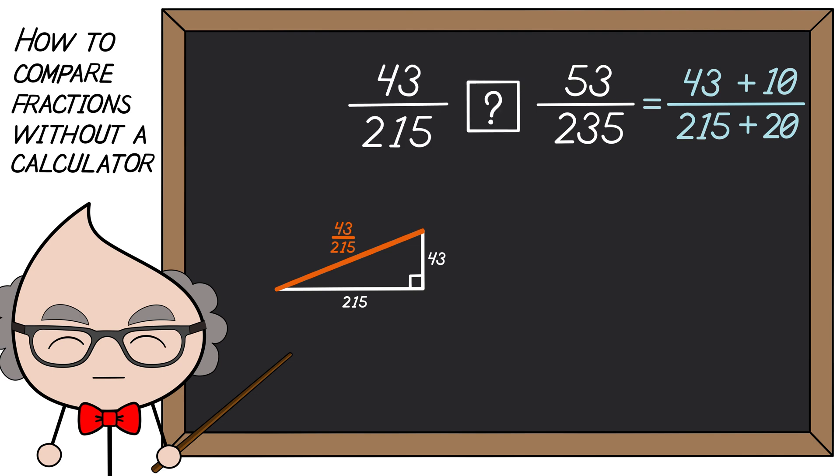First, draw a triangle that has the length of 215 with a height of 43. This triangle is obviously the same as the one on the left, but we're not done yet.